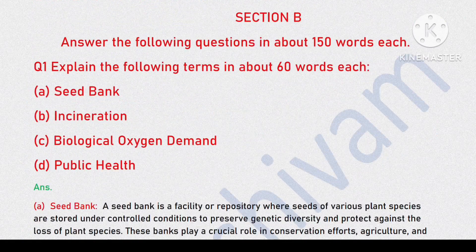Explain the following terms in about 60 words each: 1. Seed Bank, 2. Biological Oxygen Demand, 3. Public Health.